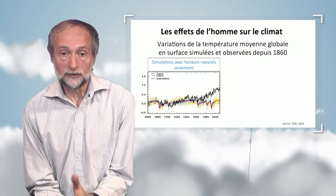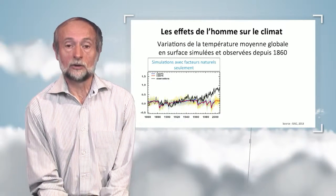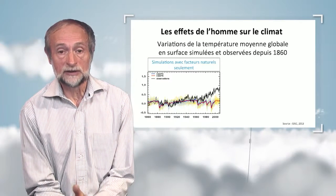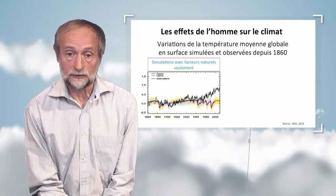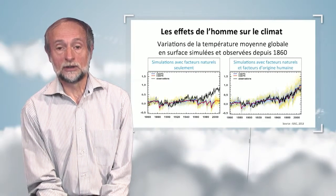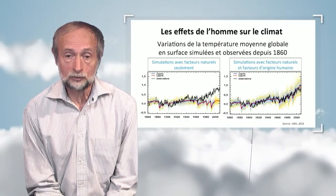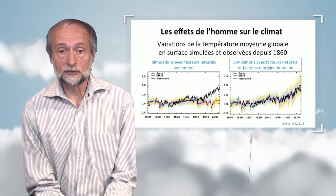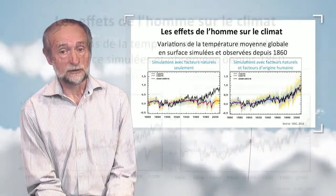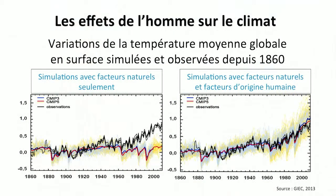Interestingly, we see the impact of the Pinatubo volcano eruption, which led to a cooling of temperatures by a few degrees. This can also be found in the observations and in the models. Now, in the simulation, if we take into consideration the greenhouse gas concentration increase due to human activities, and also the increase of aerosol particles present in the atmosphere due to human activities such as transport, the models can now simulate the temperature evolution over the last 50 years. But this is not sufficient to conclude that human activities play a major role on climate change.